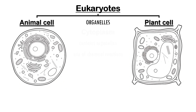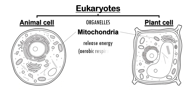Both animal and plant cells also contain lots of mitochondria. Mitochondria are like the cell's power stations. They release energy through a process called aerobic respiration. They break down sugars like glucose to release the energy the cell needs to function.